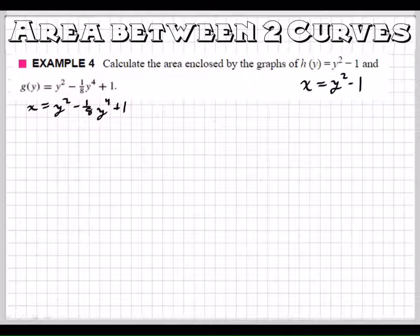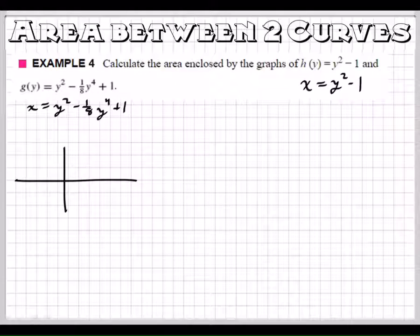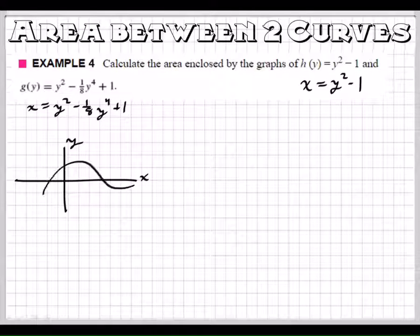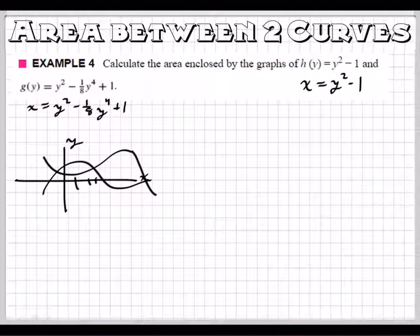Now these are weird because they're functions of y. They're not functions of x, something we're not used to seeing. If it was a function of x, then we can look at our x and y axis like normal. We're going to plug in x's to get y's, and then our lower bound and our upper bound, they'll be x values because we're plugging in x's.